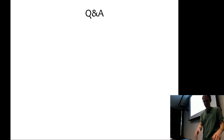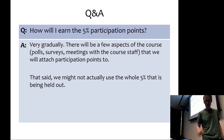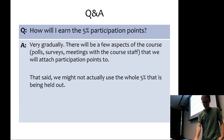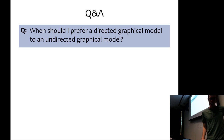One question that came up was how long are we in those 5% participation points. Very gradually there will be a few small aspects of the course that will involve your participation — maybe more if you're in 618 doing a project — and we'll attach some participation points to them. You might not actually use the whole 5%; it's just useful to hold out some space in case we need it. In that case, the whole class gets curved upwards.